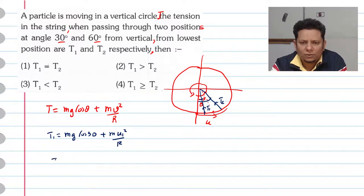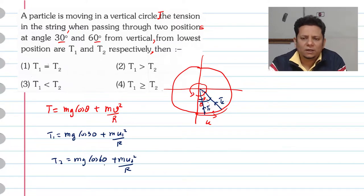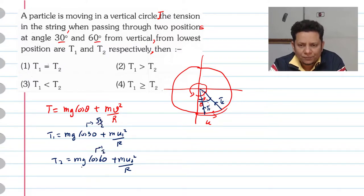And T₂ will be mg cos 60° plus mu₂²/r, where u₁ and u₂ are the respective velocities. Now we know cos 30° value is √3/2, and cos 60° value is 1/2, so this factor is also done.